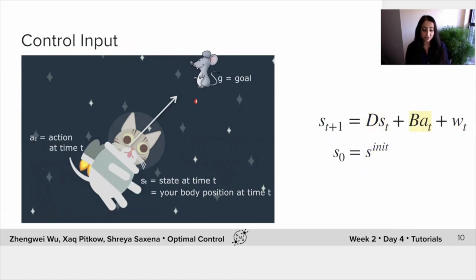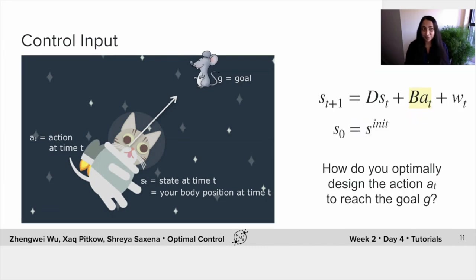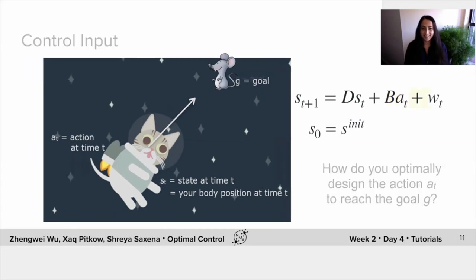Great. So of course, you want to get to the goal. So this is the action that you apply in order to get to the goal. This action also linearly adds to your state dynamics. So any action at time t, one unit of action at time t will create b units of change in your body position at time t plus one. Okay, so these are the dynamics that we're considering. And the question now becomes, how do you actually optimally design this action at time t, or at all times, in order to reach this goal that you want?